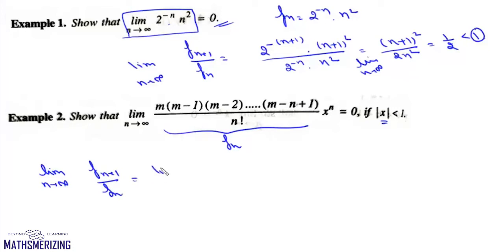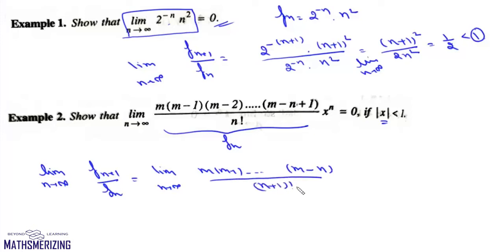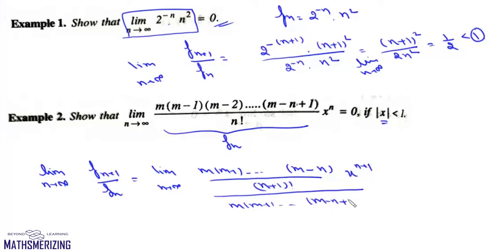Now f(n+1) will be m(m-1)(m-2)···(m-n) upon factorial (n+1) into x to the power (n+1), divided by m(m-1)···(m-n+1) upon factorial n. Now all the common terms will cancel.